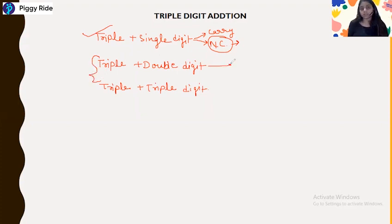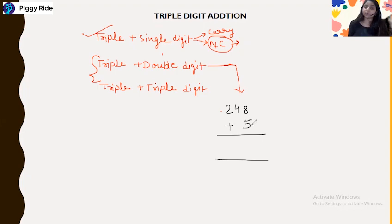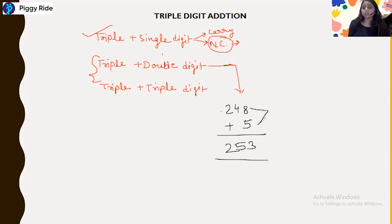Let's start with a warm-up example: 248 plus 5. This is a triple plus single digit number — just pause the video and tell me the answer. The answer is 253 because 8 plus 5 is 13, so 3 is the end digit and 4 increases by 1.